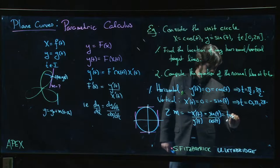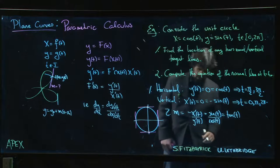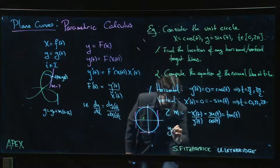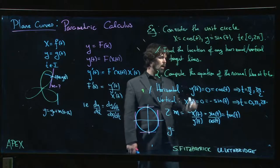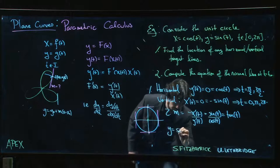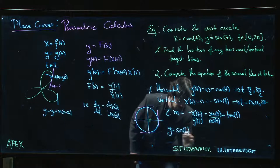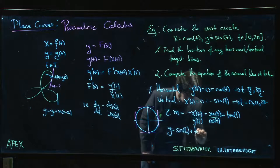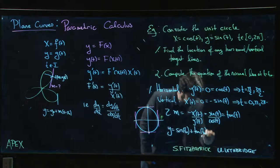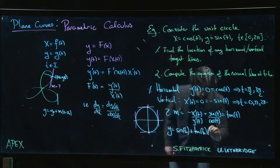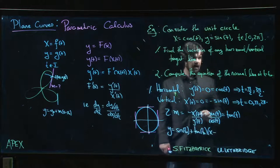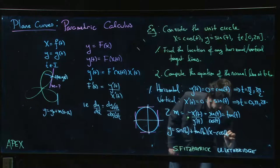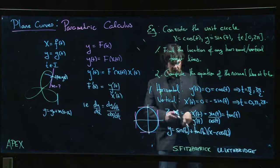So the equation of the line is going to be y equals y at t₀, which is sin(t₀), plus the slope...